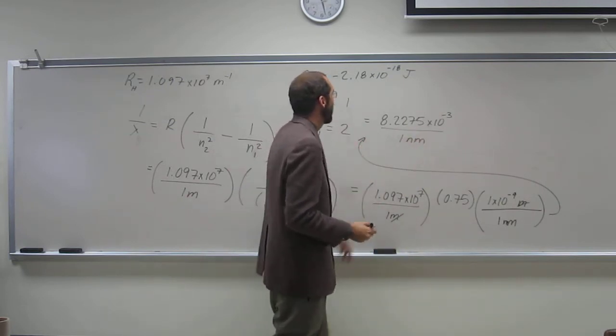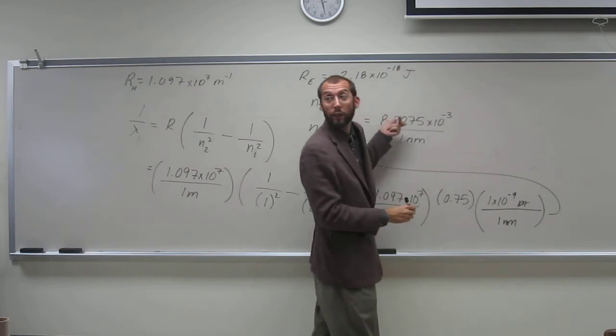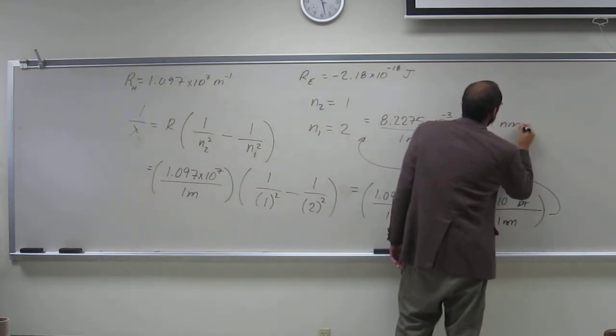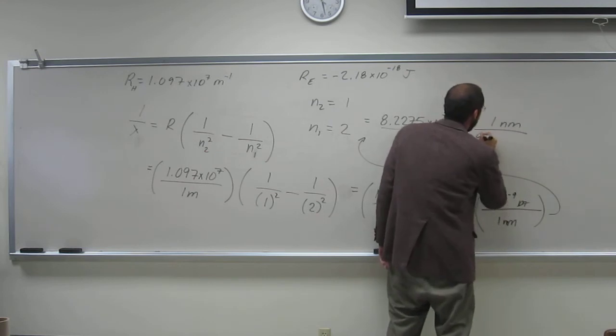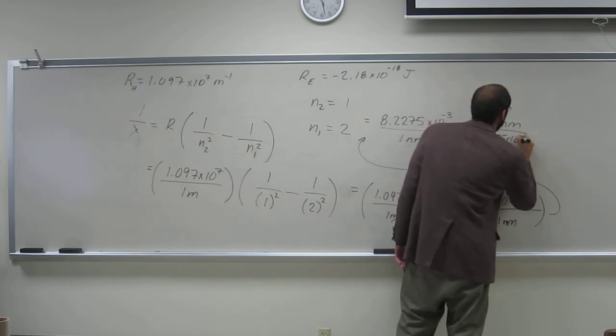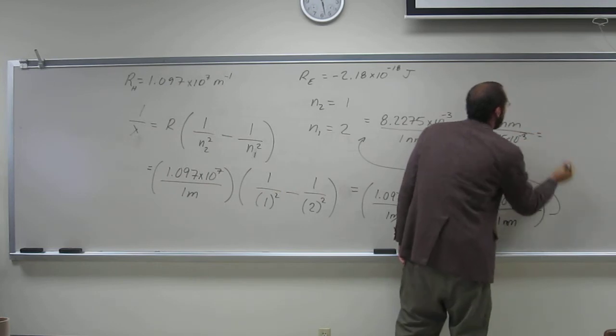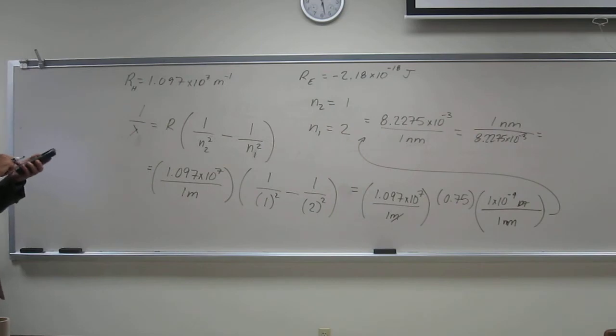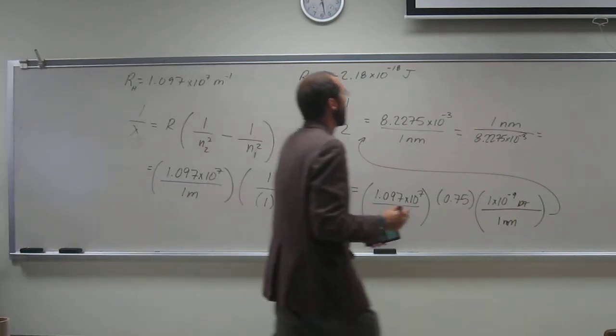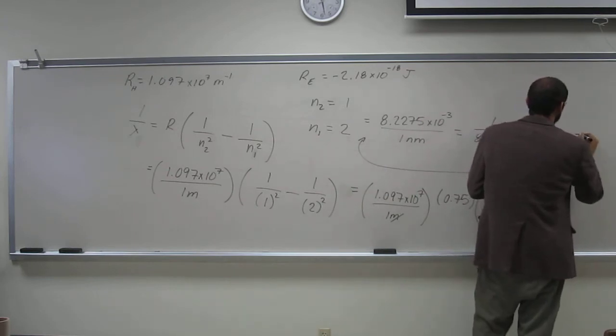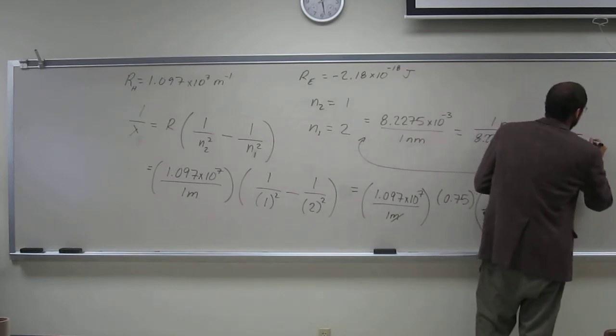So when we do that, of course, we just invert this thing. So we say 1 nanometer divided by 8.2275 times 10 to the negative 3. And that should give us our number. They're all proud of you guys for being here. And that number is 121.5 nanometers.